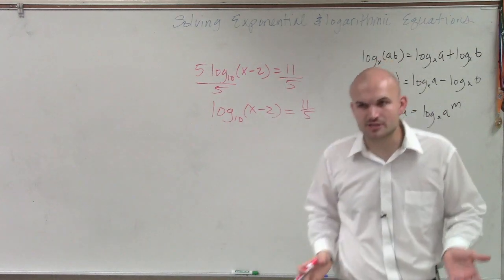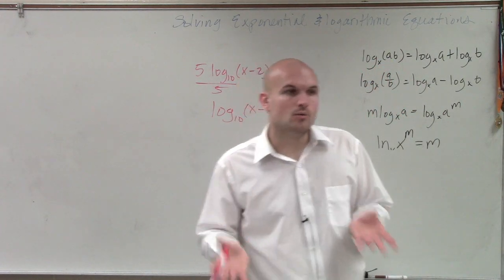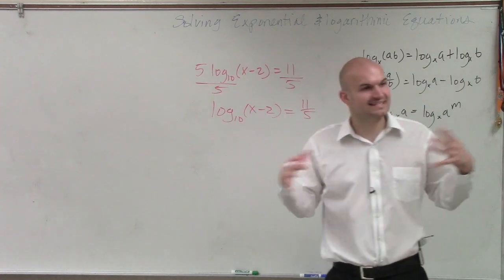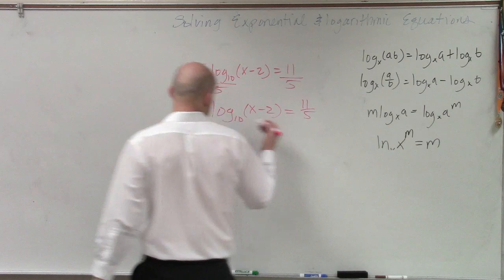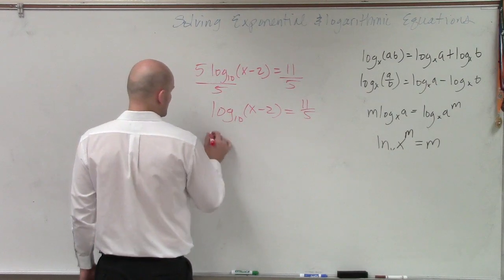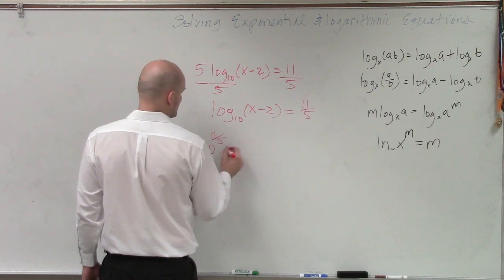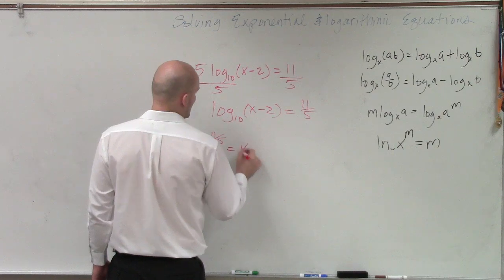A lot of times, ladies and gentlemen, if we get stuck at a log, what we can do is rewrite it in exponential form. So if I rewrite this in exponential form, I have 10 to the 11 fifths equals x minus 2.